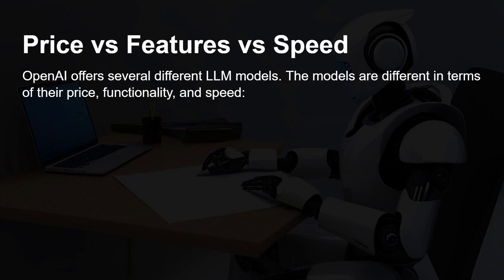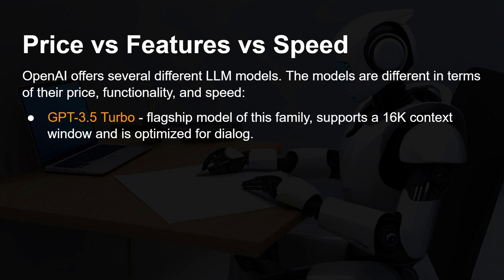OpenAI offers several different large language models. The models differ in terms of their price, their functionality, and their speed. We've got GPT 3.5 Turbo — this is the flagship model of the GPT 3.5 family, supports 16K context windows, and is optimised for dialogue. That's often the one you get for free when you go to the ChatGPT website.